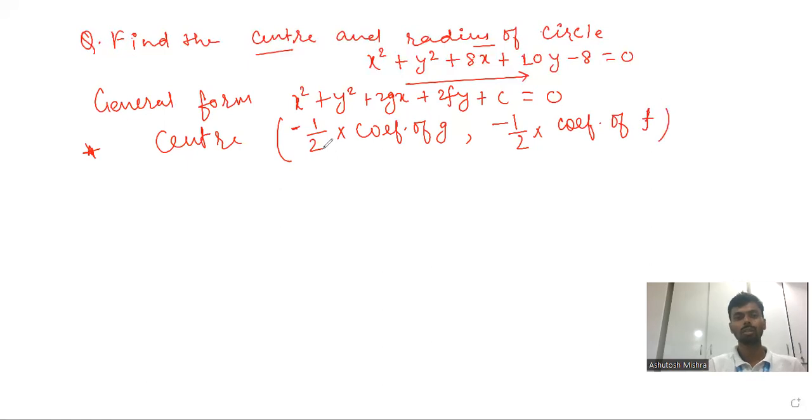We have minus half, and then we have the coefficient of y in the given equation. It is the general form. Students, compare and then we have y coefficient which is 10. This is the x-coordinate, and then we have the coordinates as minus 4 and minus 5. First answer has the center coordinate.